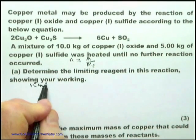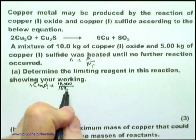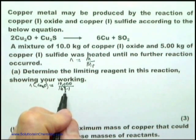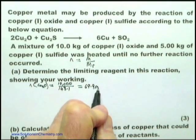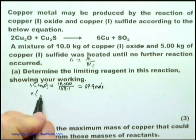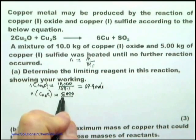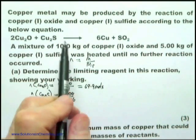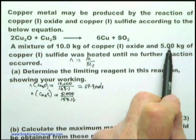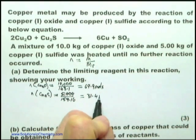N of Cu2O equals 10,000 divided by 143.1 — two copper atoms plus one oxygen atom, from the periodic table in the data booklet — which equals 69.9 moles. Then N of copper sulfide equals 5,000 divided by 159.16, which gives 31.4 moles. I'm using two decimal places here; it's only the beginning of the calculation so I'll leave it there.